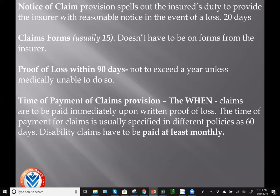It does not actually have to be on forms from the insurer. The proof of loss provision says you must provide proof of loss within 90 days, not to exceed a year, unless you are in a coma, in which case they will give you longer. Memorize: notice of claim is 20 days, claim forms is 15 days, and proof of loss is 90 days.